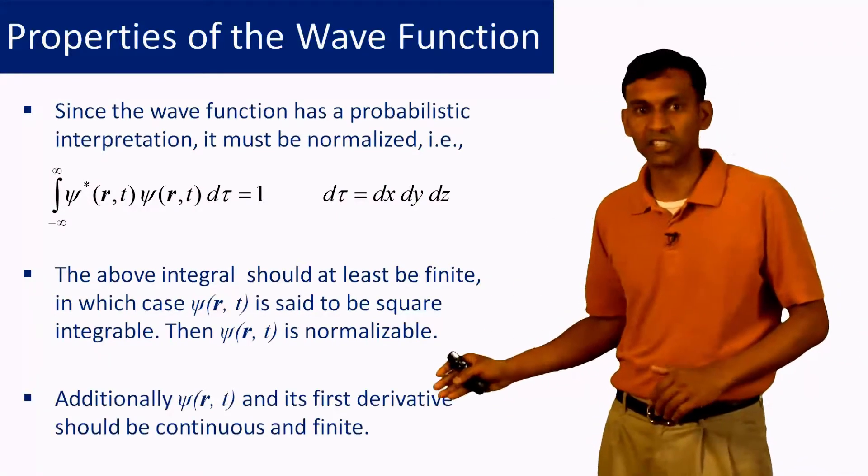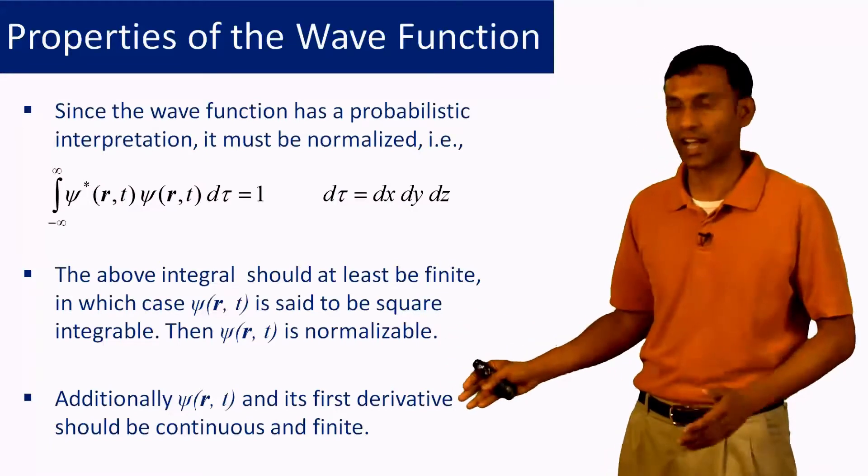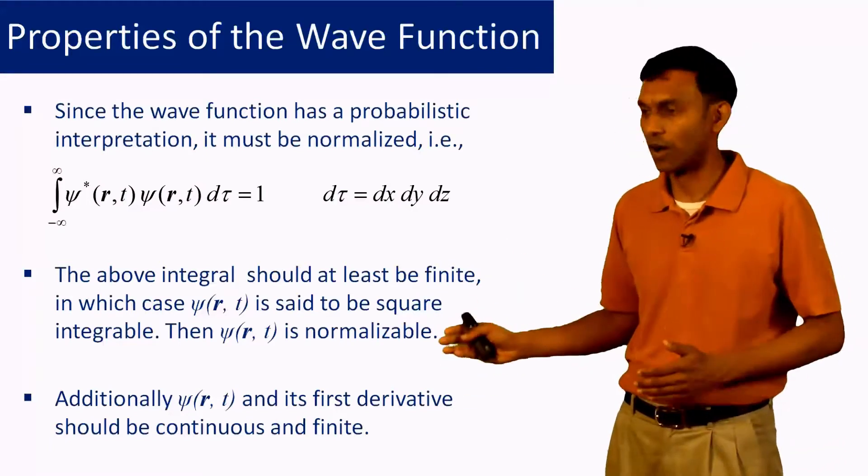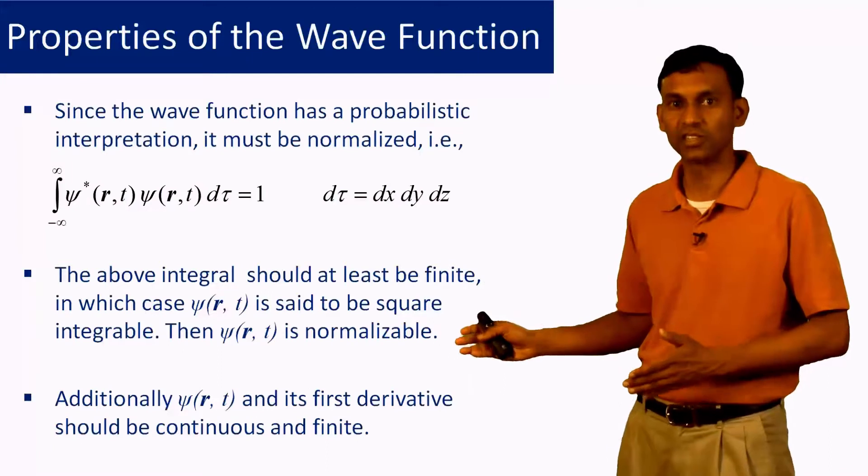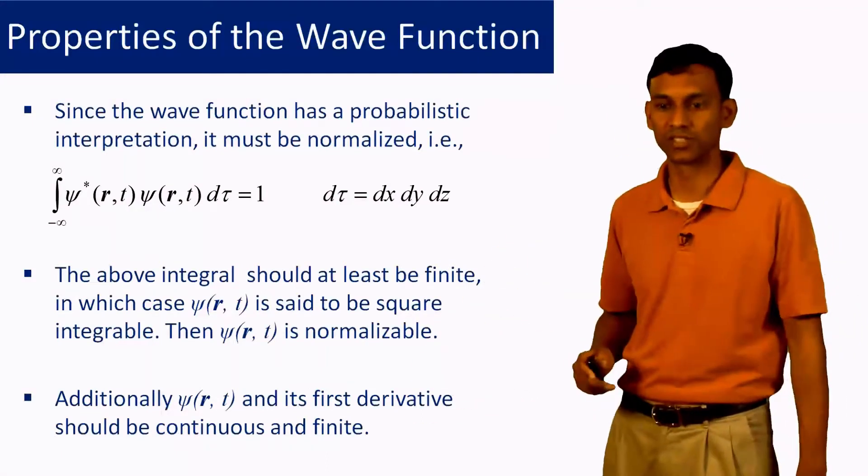Additionally, the wave function and its first derivative should be continuous and finite. That is another requirement on the wave function for it to be a valid wave function describing a quantum system.